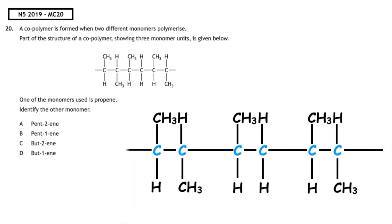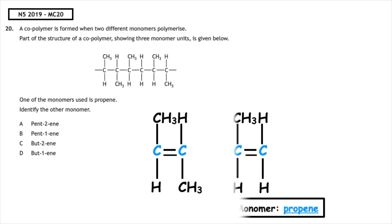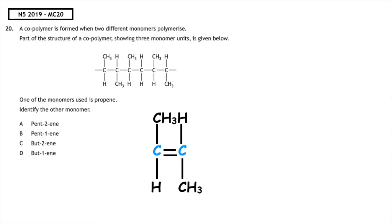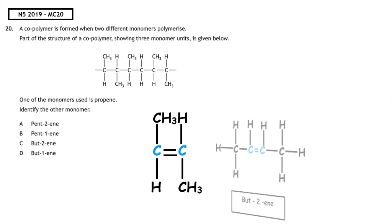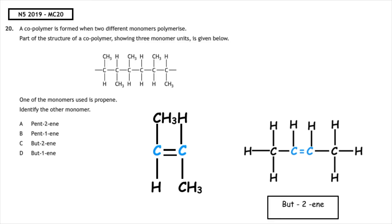Step number one: we want to break the bonds between every two carbon atoms. We then fold in the arms to create the carbon-to-carbon double bonds. The monomer propene would have three carbon atoms, so we want to get rid of that because it's already been identified in the question. We then want to take the monomer out of the H shape, and when we do this and name it, the name of the other monomer is but-2-ene.